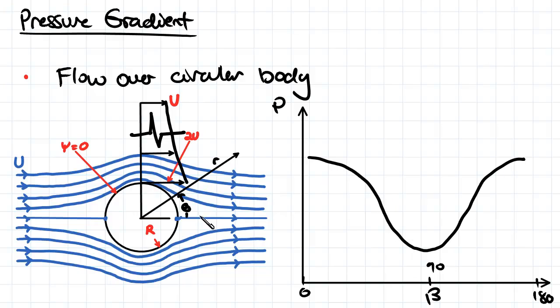And then as we come down near the side of our cylinder, we're going to increase in pressure again, and that's an unfavorable pressure gradient.